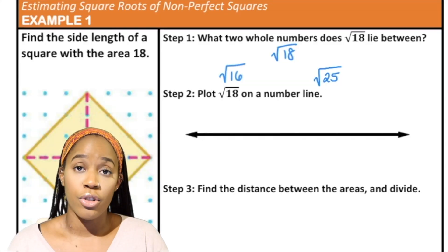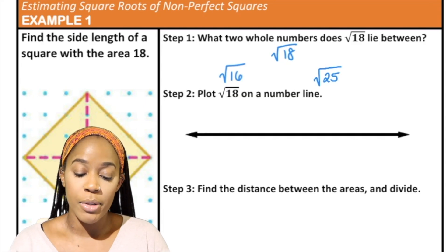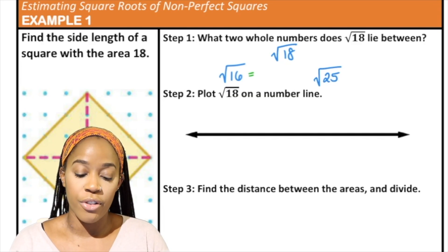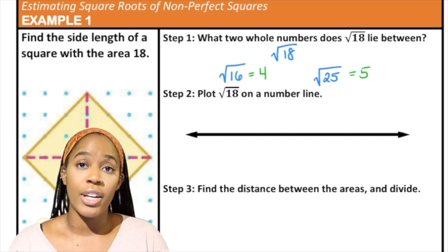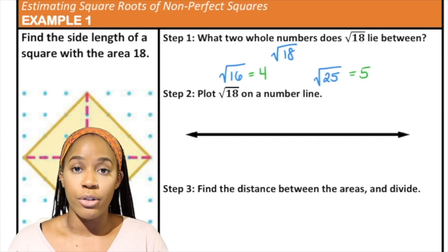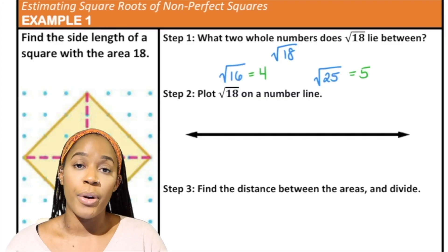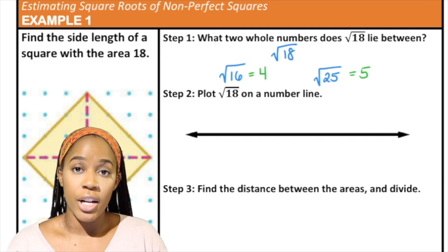We have to know what these radicals are, because in order to tell what two whole numbers they lie between, we have to take the square root of those two perfect squares that we know. So we know that radical 18, because it lies between radical 16 and radical 25, means that when we actually find the square root of 18 it's going to be somewhere between 4 and 5.